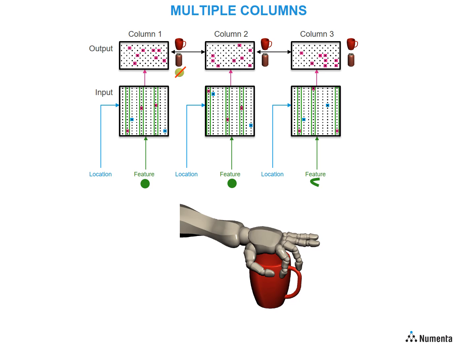Now it does a second grasp, and again the columns arrive at a stable representation, and here it knows that it must be the cup.